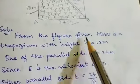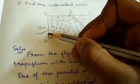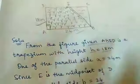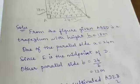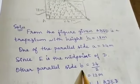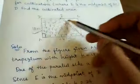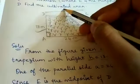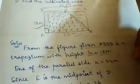From the figure, given ABED is a trapezium with height h equals 18 meters. It is a rectangle. So one of the parallel sides a equals 24 meters. Since E is the midpoint of D, other parallel side b equals 24 by 2, which is 12 meters.